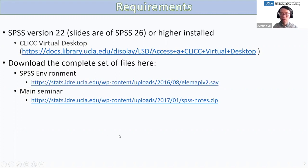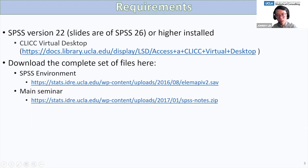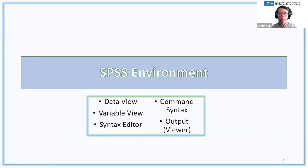This is where we download the SPSS files. The main file is the zip file. We're going to go over the SPSS environment — the five main things are the data view, the variable view, the syntax editor, the command syntax, and the output viewer. Basically four main elements of SPSS that we will go over, plus the command syntax which we'll mention but not go over in depth.